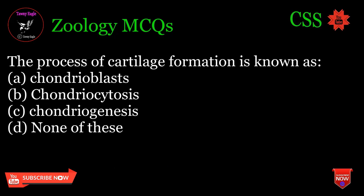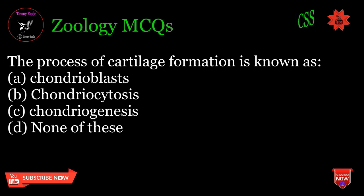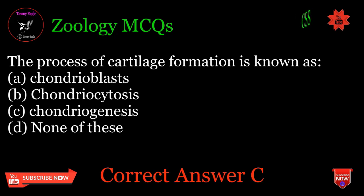The process of cartilage formation is known as: A. Chondroblasts, B. Chondriocytosis, C. Chondrogenesis, D. None of these. Correct answer: C.